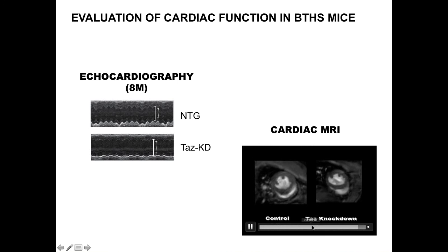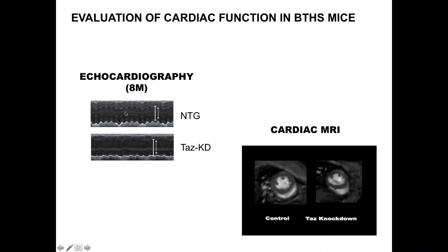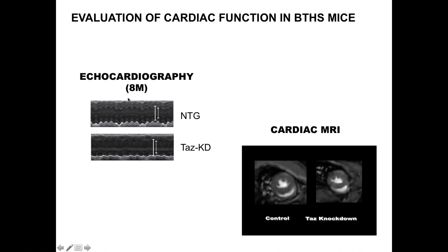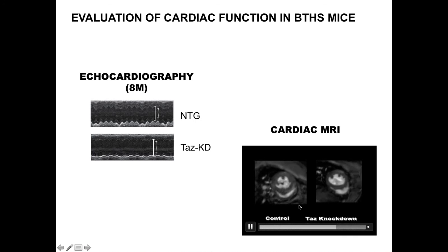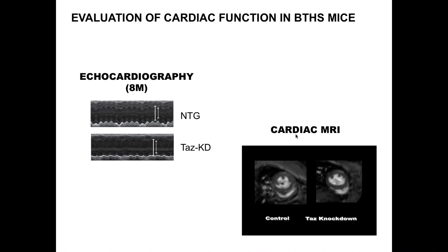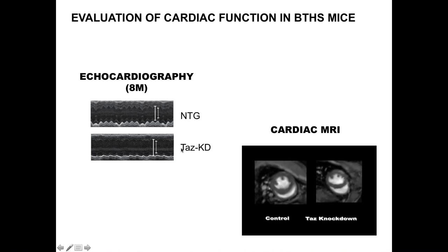Using echocardiography, we can see that the hearts of tafazzin knockdown mice are more dilated. This phenotype — dilated cardiomyopathy — appears after 7 months of age; before 3 months they appear normal. We can clearly see the difference between normal hearts and the dilated tafazzin knockdown hearts. We also performed cardiac MRI on sedated mice, which takes about 15 minutes per recording, though echocardiography is much easier to perform.